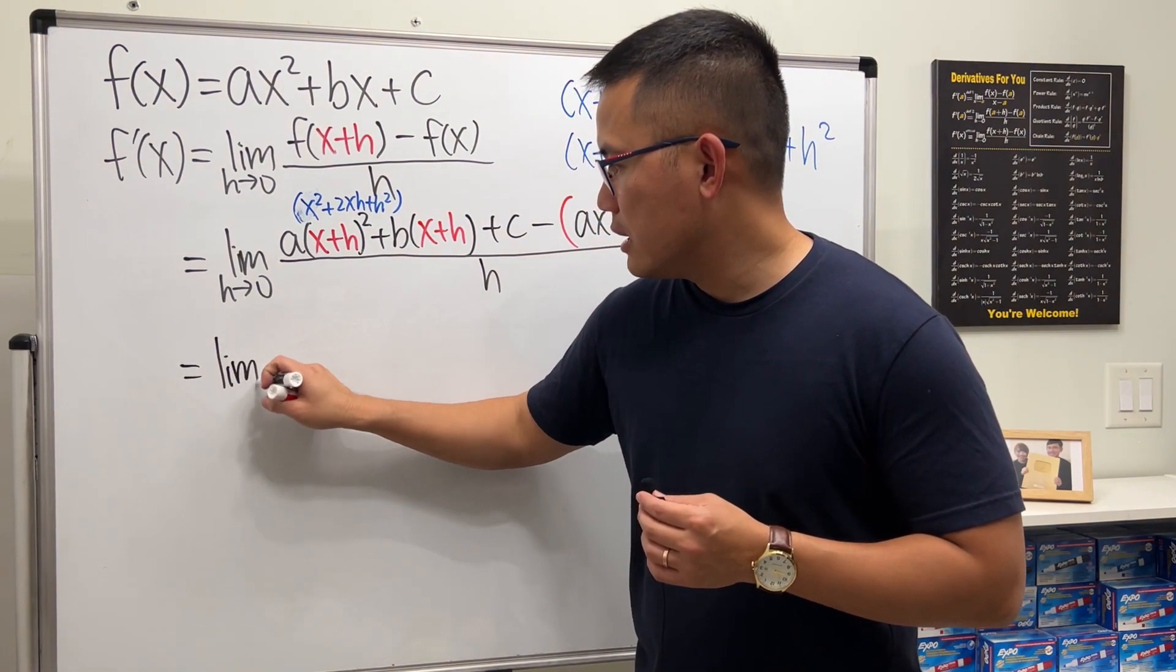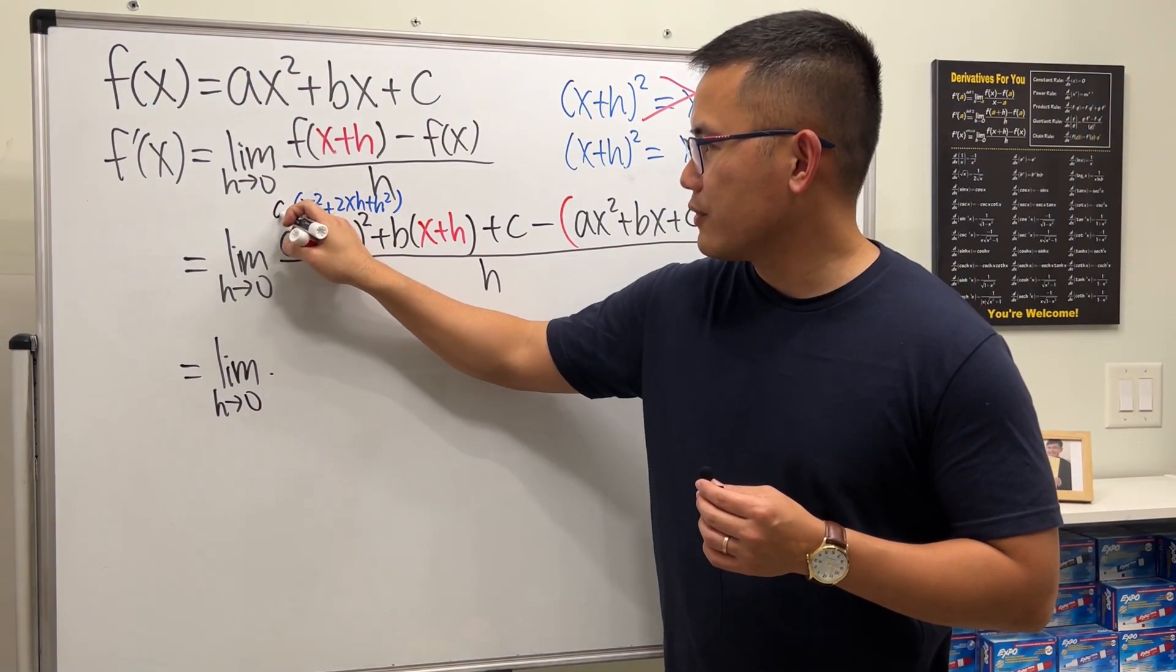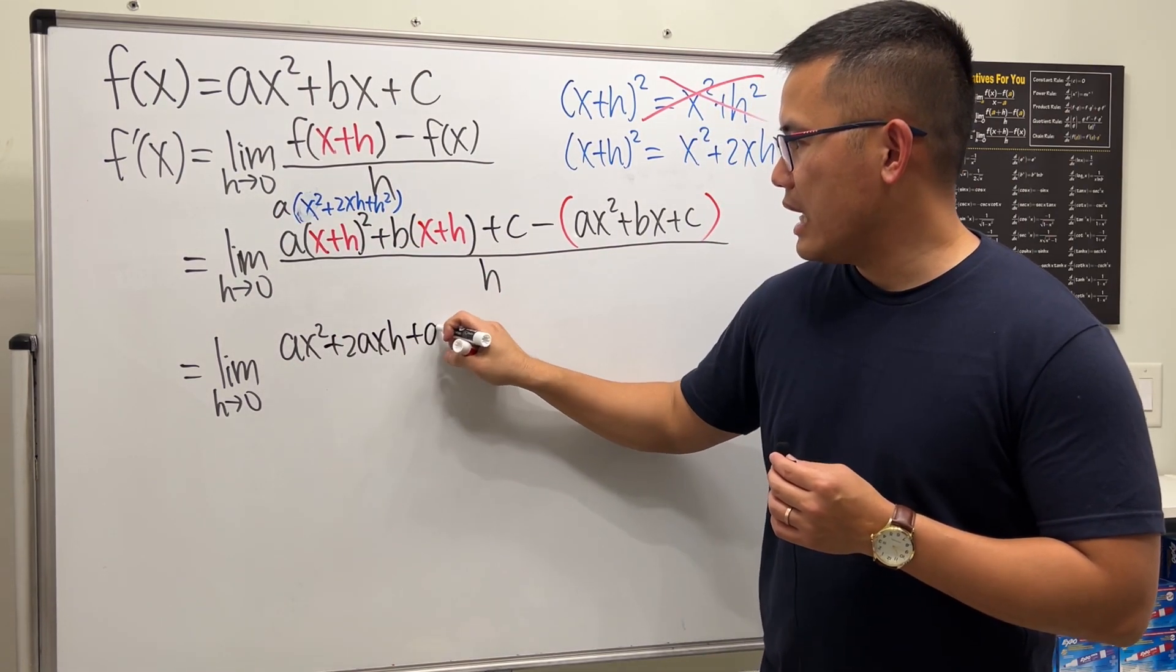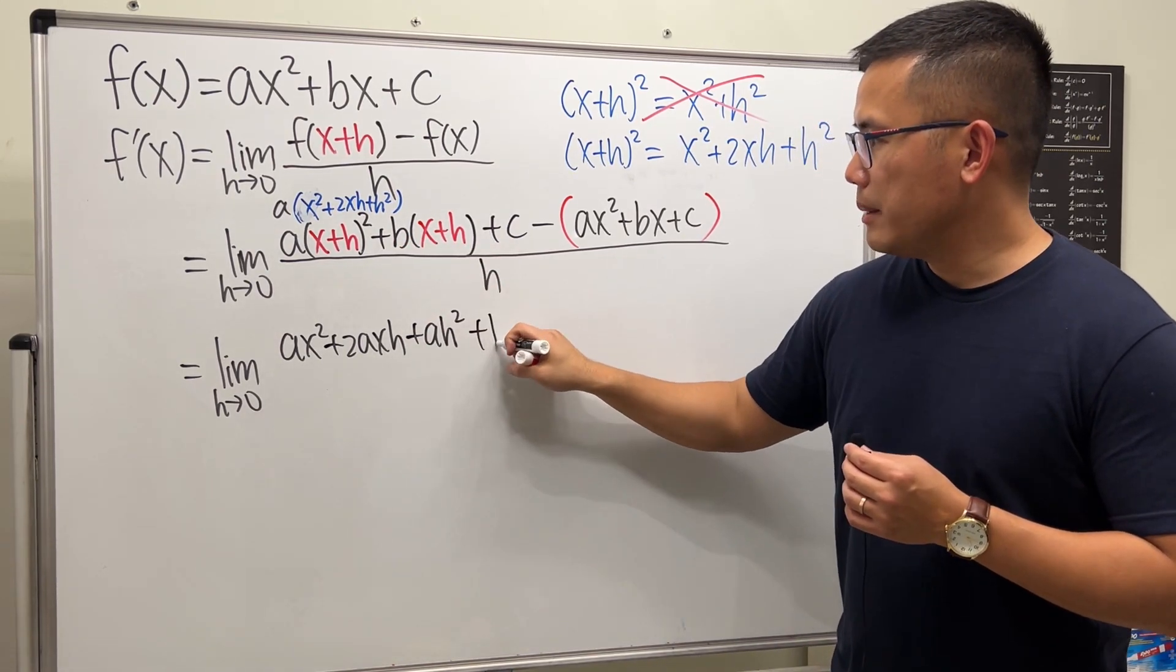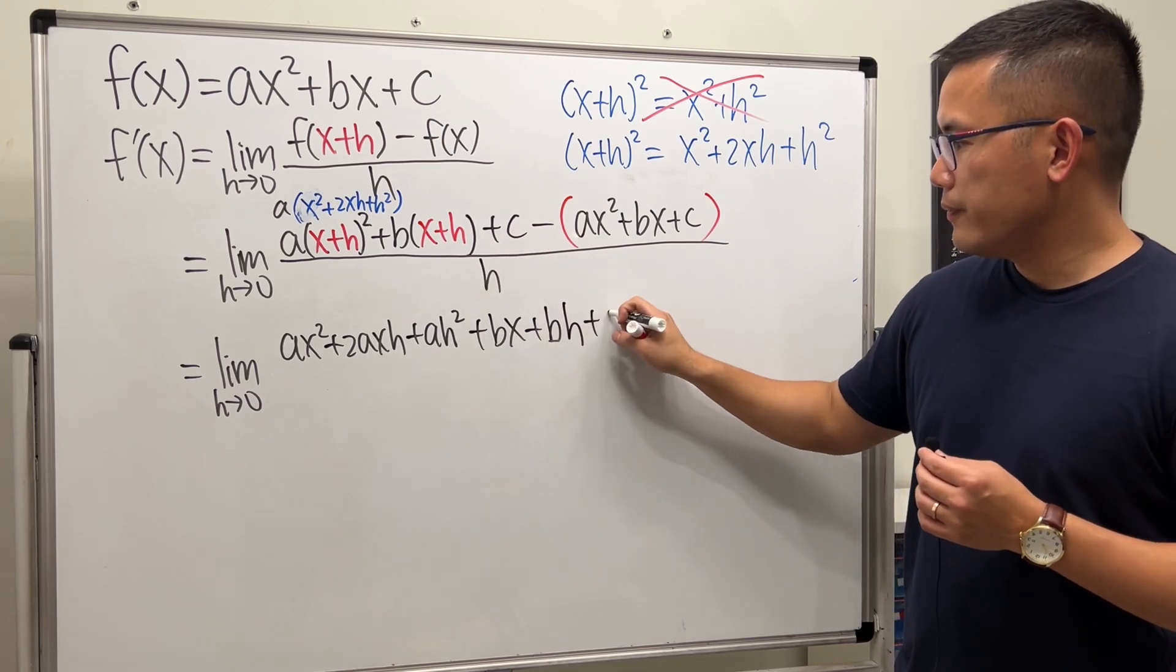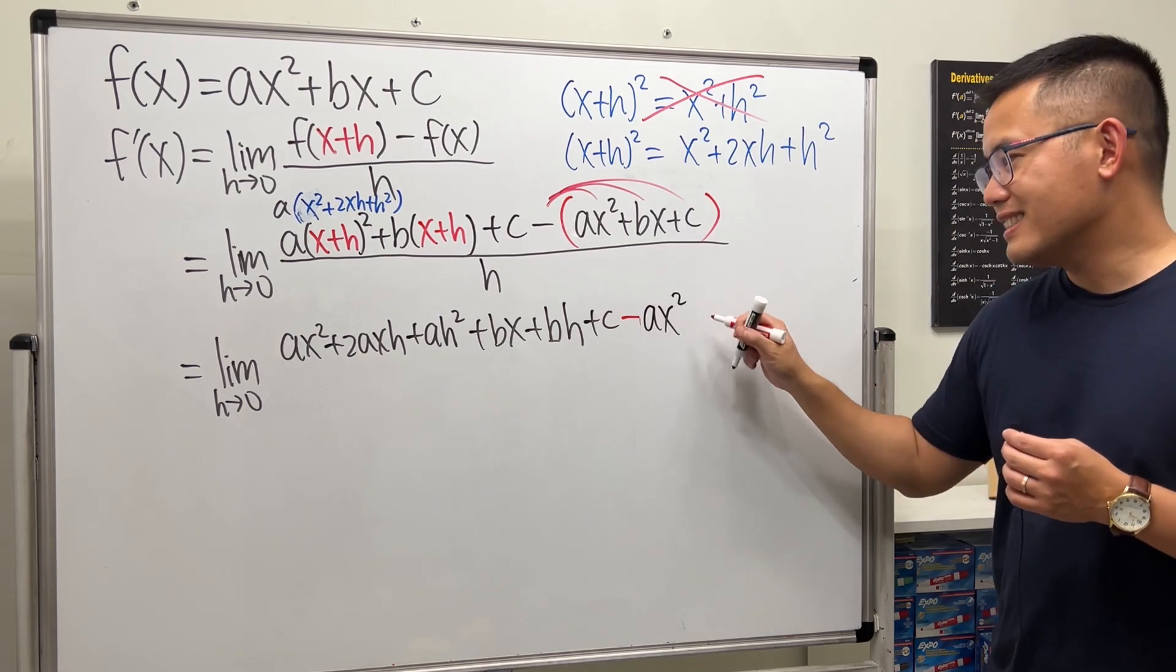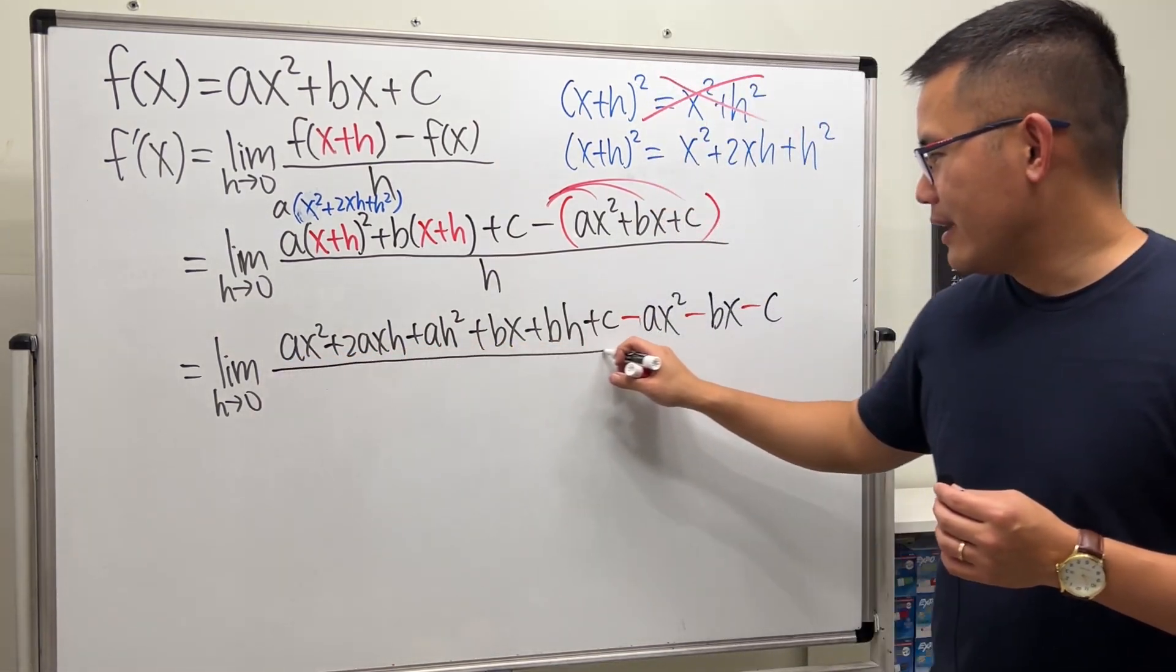And I will distribute the a inside. So we get the limit h approaching 0. Let me just multiply the a. We get ax squared, and then a times that, so plus 2axh. And then a times that, so plus ah squared. And then next, we do this times that, so plus bx and then plus bh. And then we add a c. And then right here, we're going to distribute the negative. So we get minus ax squared, and then minus bx, and then minus c. I told you, it got longer, right?